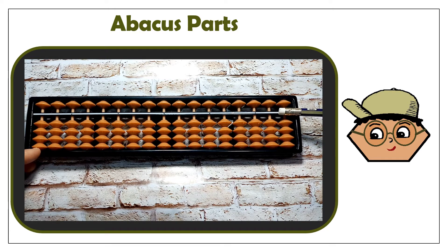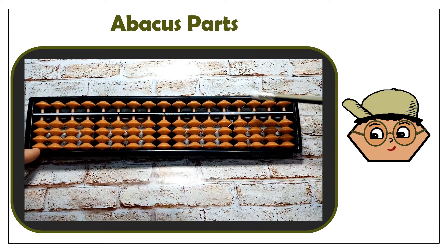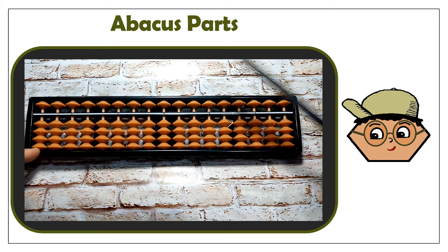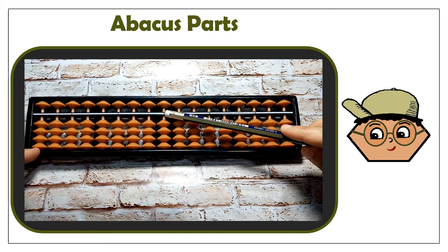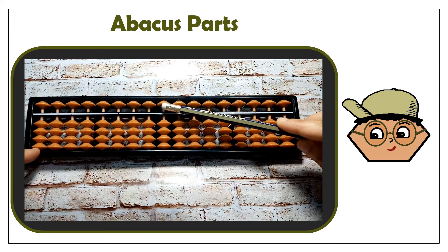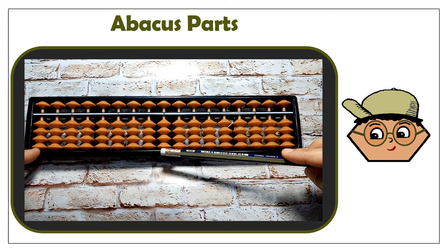We also have a divider line that separates the lower beads from the upper beads. This divider line is called the bar. On this bar, you will find some points. These points are column indicators.